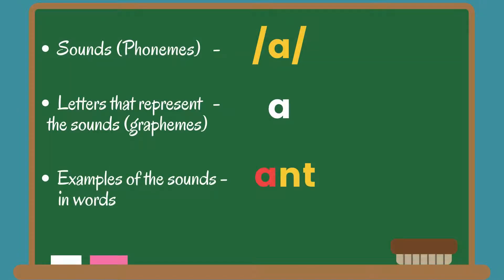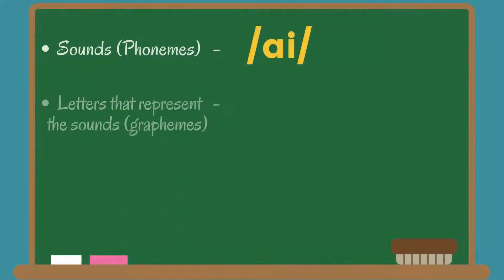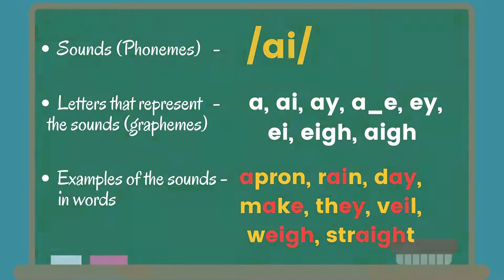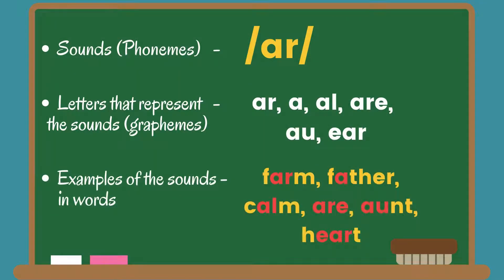A: Ant. Apron, Rain, Day, Make, They, Veil, Way, Straight. R: Farm, Father, Calm. Aunt, Heart.